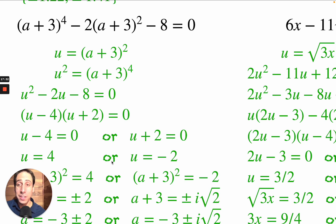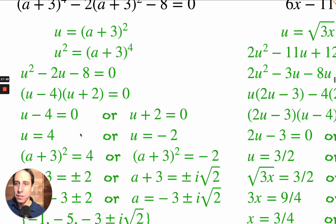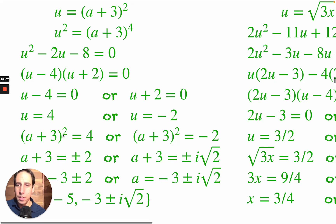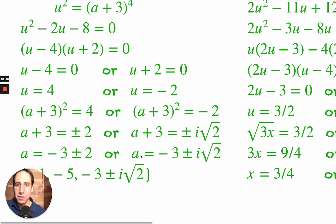We're not finished — we started with a and must end with a. Back-substitute: u equals (a plus 3) squared. So (a plus 3) squared equals 4 or (a plus 3) squared equals minus 2. Taking the square root of both sides: the square root of 4 is plus or minus 2, and the square root of minus 2 is plus or minus i root 2. Then subtracting 3 gives the final solutions.